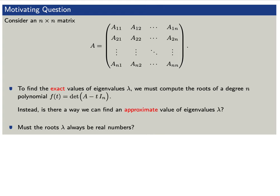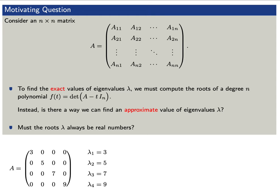Moreover, must the roots lambda be real numbers, or should they lie in a different set? We'll give an example to illustrate. Consider the following 4x4 matrix A. We can compute that the eigenvalues are 3, 5, 7, and 9.